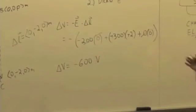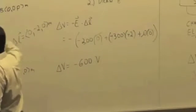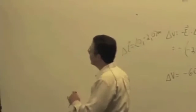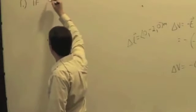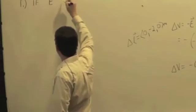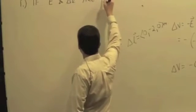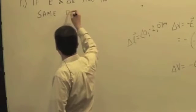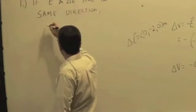All these exercises point to some things we should keep in mind as we're doing these problems. First, if the electric field and the path vector are in the same direction, then what did we get for delta V? What sign was it?